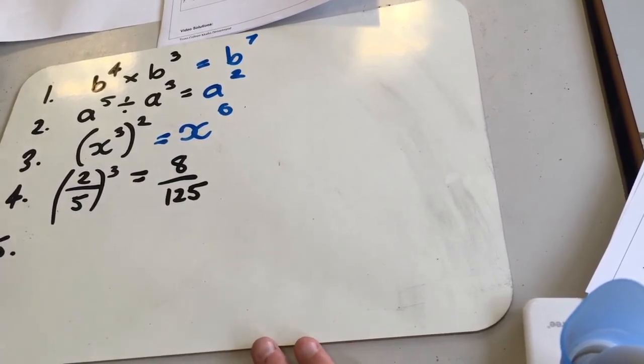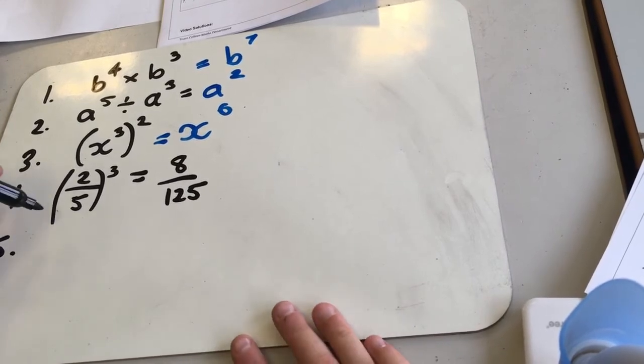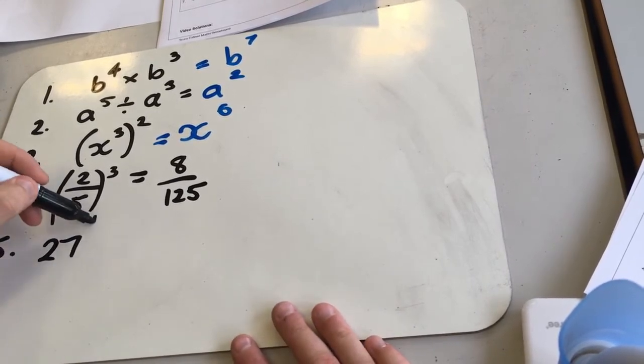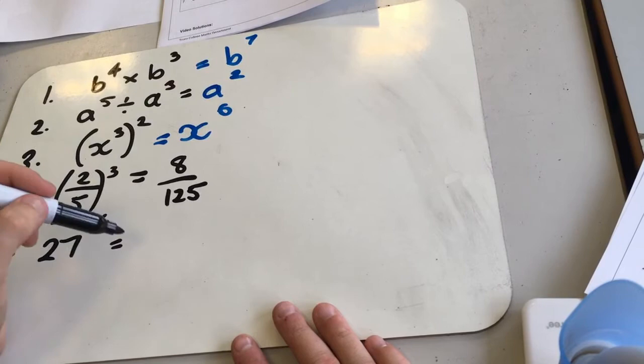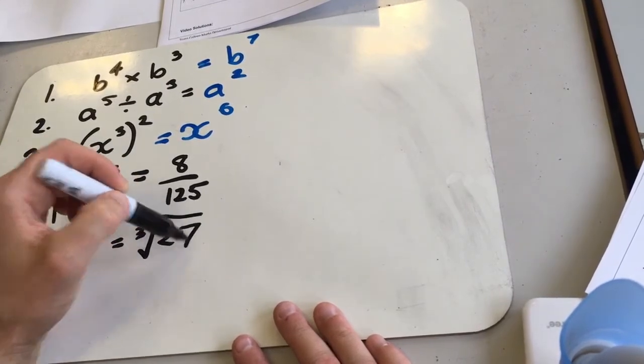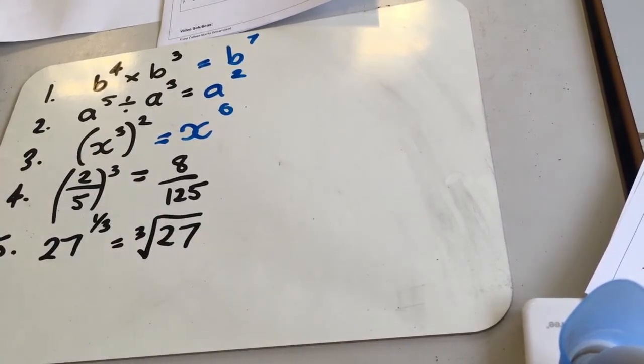Question 5, we've got 27 to the power of a third, which is basically the cube root of 27. The cube root of 27 is going to be 3 if you know your three times table. There we go, you need to make sure you know that one.